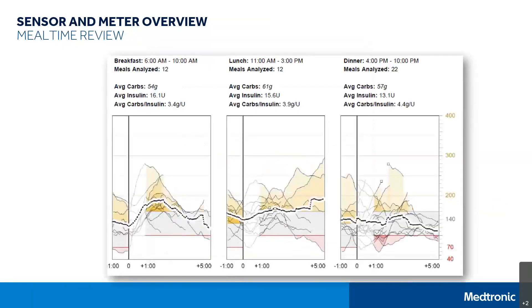Next, we will move on to the meal summaries. You will need to be using the bolus wizard feature to generate data in this section, and the times can be customized for each meal. The start of the meal will be marked as zero and extend by however many hours you have set for the meal period — in the breakfast chart here, the meal window is set for five hours. Pay attention to high and low patterns after meals. It's recommended that you rise 30 to 60 milligrams per deciliter post-meal. If you are dropping within two hours after a meal, like the dinner example on the screen, your carb ratio may need to be adjusted. If you notice this, please report it to your healthcare provider.